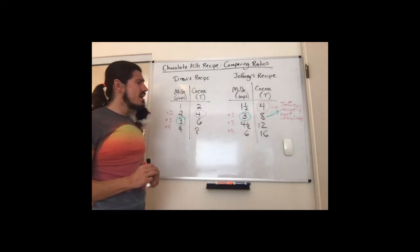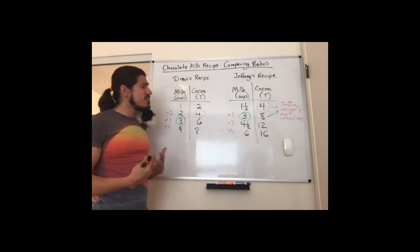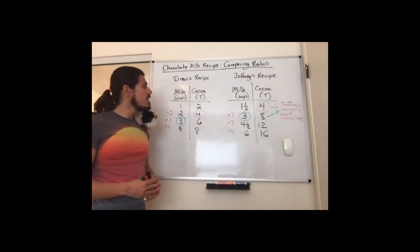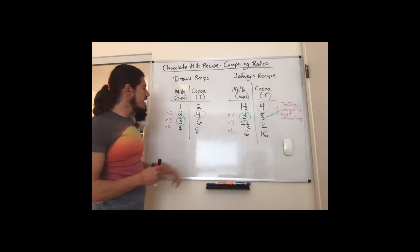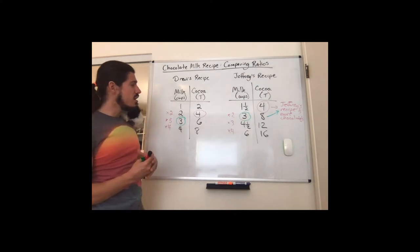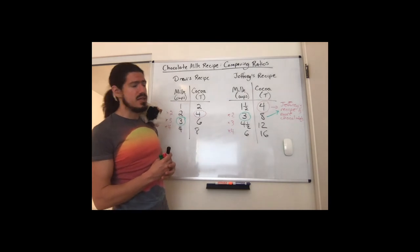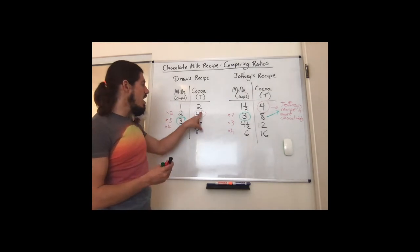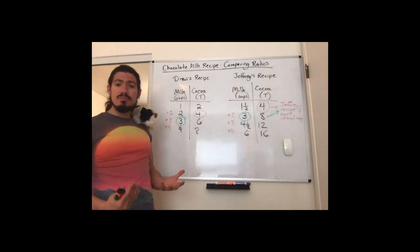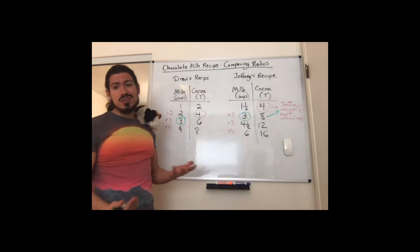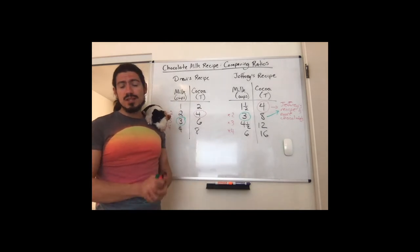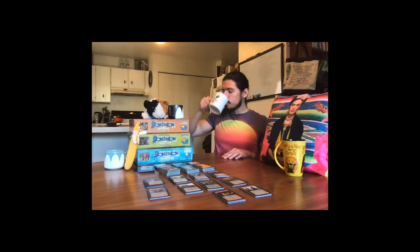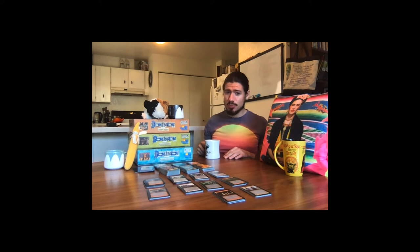The key point is that if we're comparing two different ratios, we need to find a common part — sometimes called a common term, since numbers in a ratio are usually called terms. Here I found a common term of three cups of milk, then compared how much cocoa there was in each recipe. Or I could use the common term of four tablespoons of cocoa and compare the amount of milk. Either method works and brings us to the same conclusion. Let's make Jeffrey's recipe and find out — and you were right, Jeffrey, that is more chocolatey! Maybe a little too chocolatey for me.